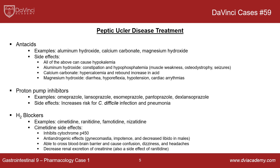H2 blockers all have a similar ending: '-tidine.' Examples are cimetidine, ranitidine, famotidine, and nizatidine. Cimetidine specifically has notable side effects: it inhibits cytochrome P450, leading to many drug interactions; it has anti-androgenic effects that can cause gynecomastia, impotence, and decreased libido in males; it can cross the blood-brain barrier causing confusion, dizziness, and headaches. Both cimetidine and ranitidine can decrease renal excretion of creatinine.